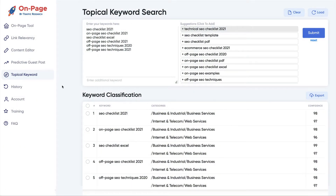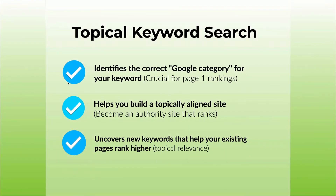This is what it looks like. Essentially, OnPage's newest feature in the Guru plans and in the big agency plans is the Topical Keyword Search, which allows you to find a whole bunch of keywords that are topically related and classified the same way that Google classifies them. Let me explain and show you what you could do. With the Topical Keyword Search, you could correctly identify the Google category for your keyword. This is crucial for page one rankings. It can actually help you build a topically aligned site. I'm going to show you how you could become an authority that ranks for everything. And it could also help you uncover new keywords that could help your existing pages rank higher, especially if you're stuck using topical relevance. You could get those pages moving and ranking better than ever.